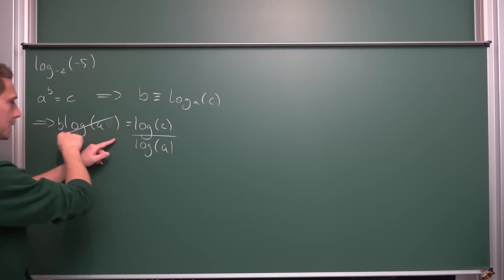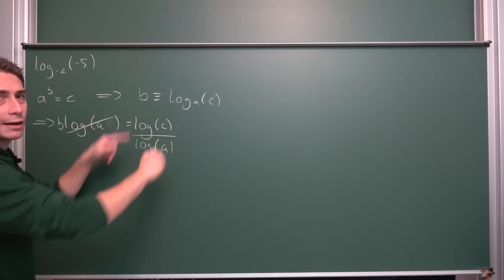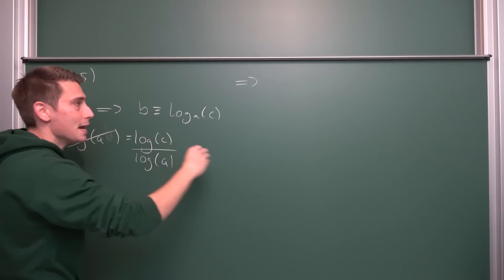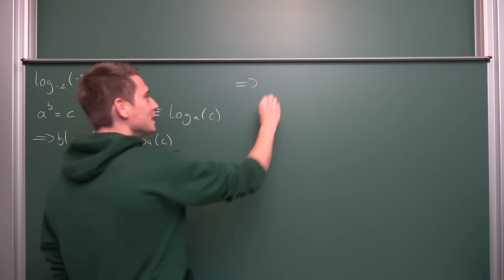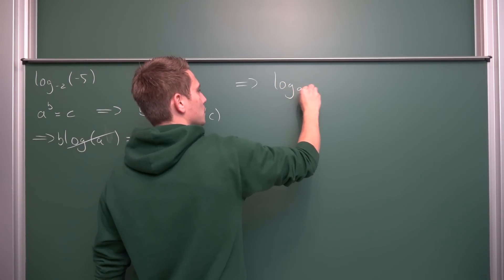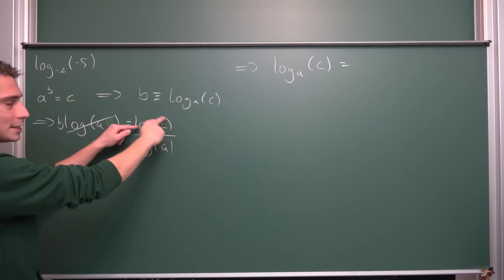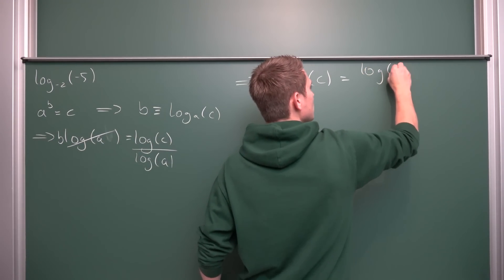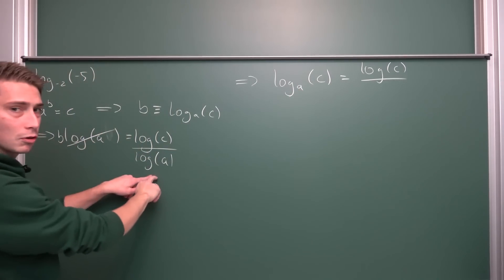But we also know what b is, so we can do a very nice change of base — meaning that the logarithm base a of z is hence nothing but the natural log of z over the natural log of a.